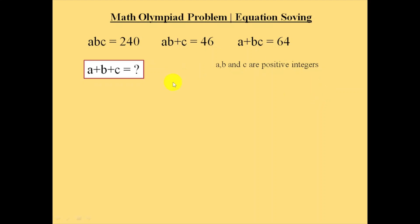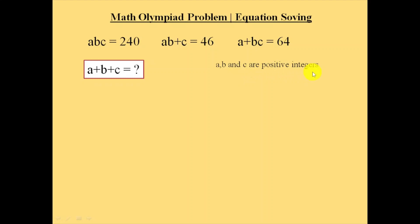Hello everyone. In this session we are going to calculate the value of a plus b plus c, where a into b into c is equal to 240, ab plus c is equal to 46, and a plus bc is equal to 64, and a, b, and c are positive integers.